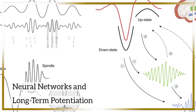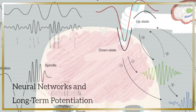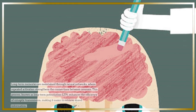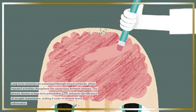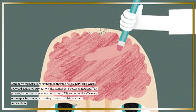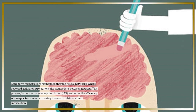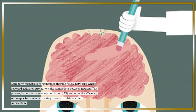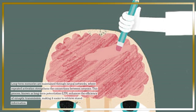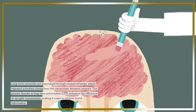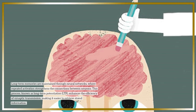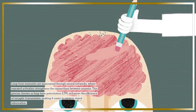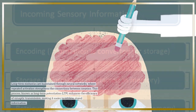Long-term memories are maintained through neural networks, where repeated activation strengthens the connections between neurons. This process, known as long-term potentiation (LTP), enhances the efficiency of synaptic transmission, making it easier to retrieve stored information.